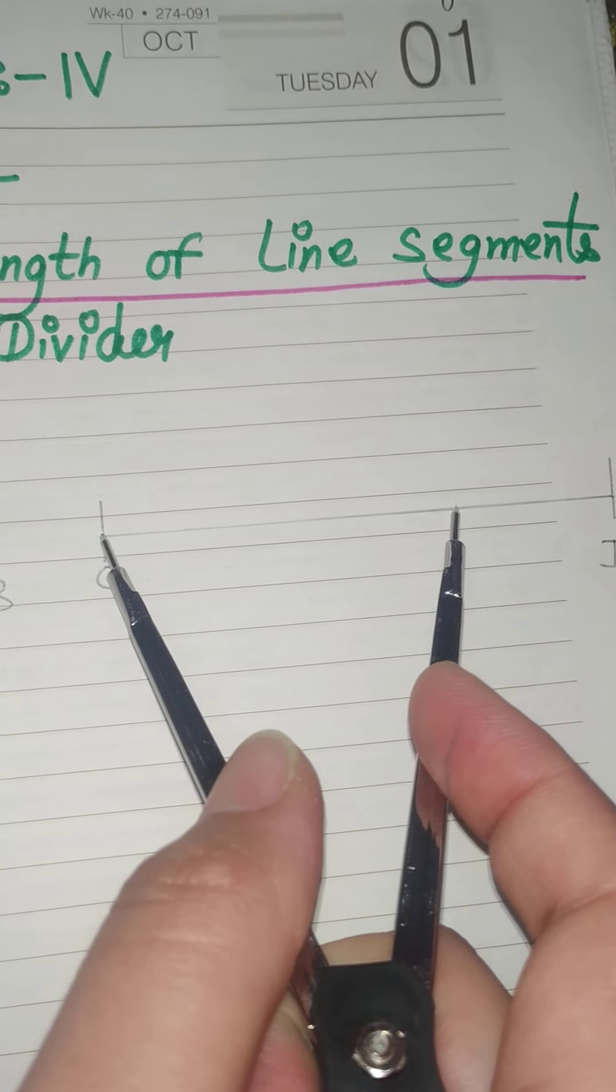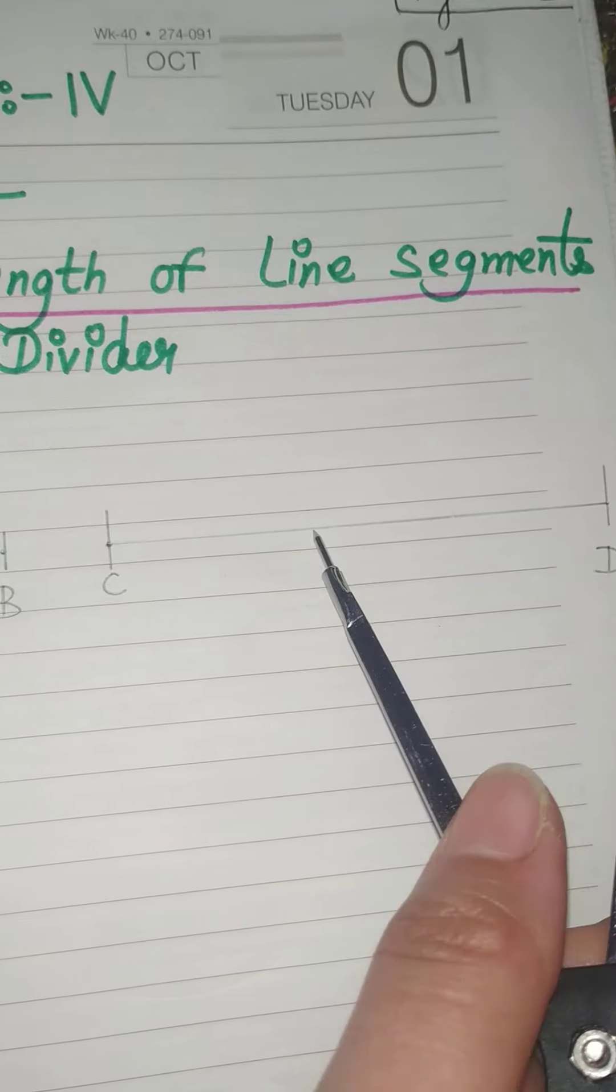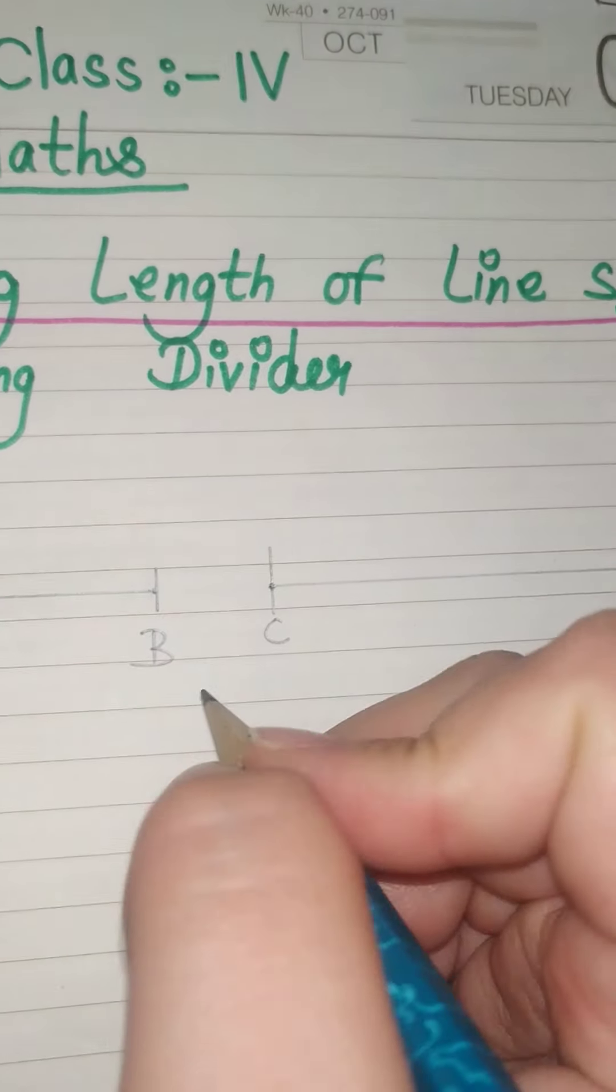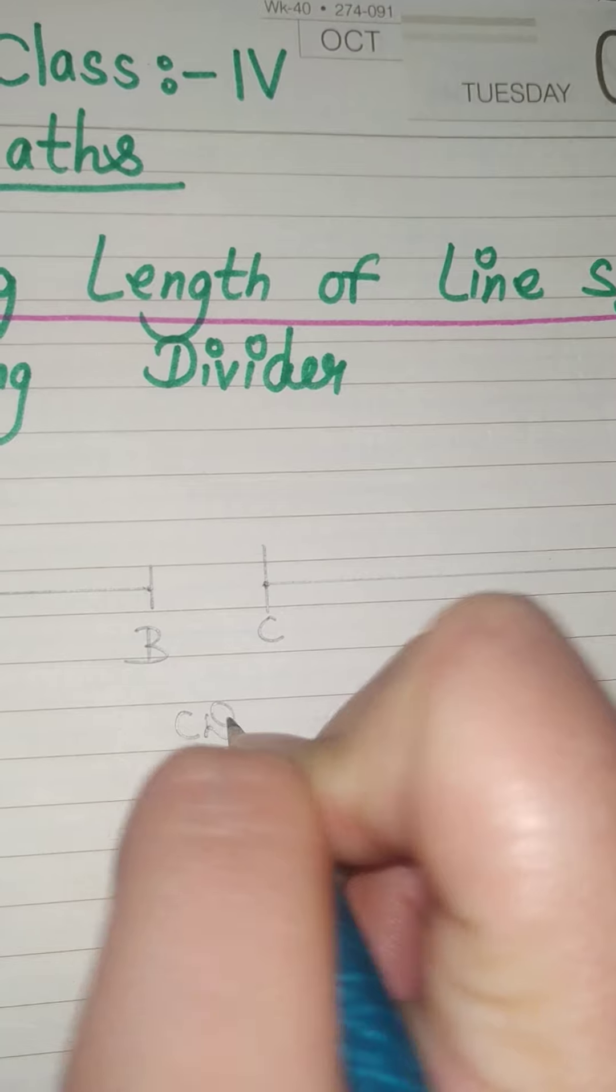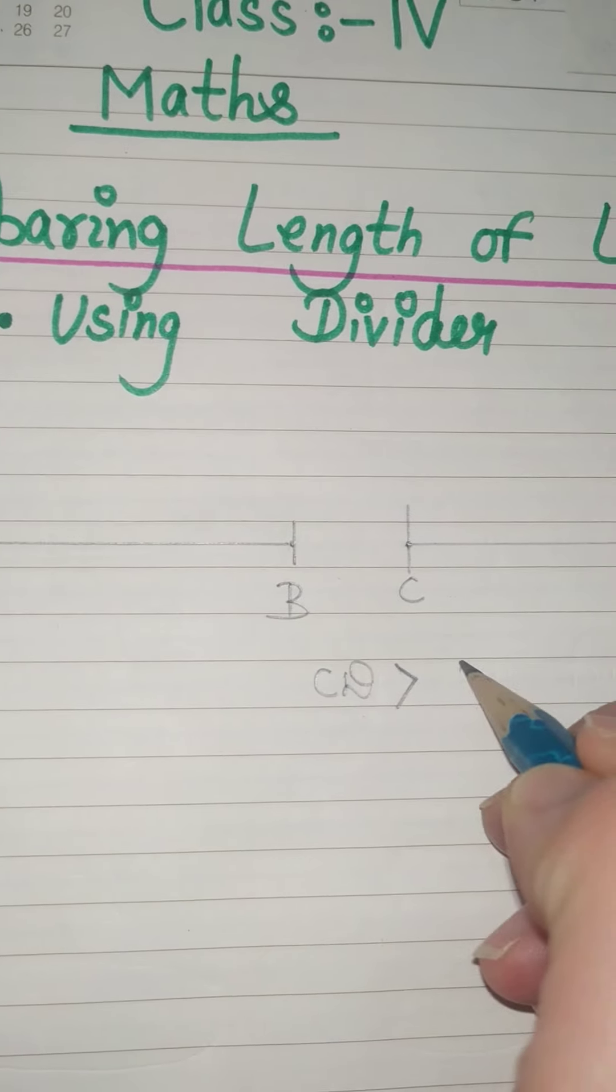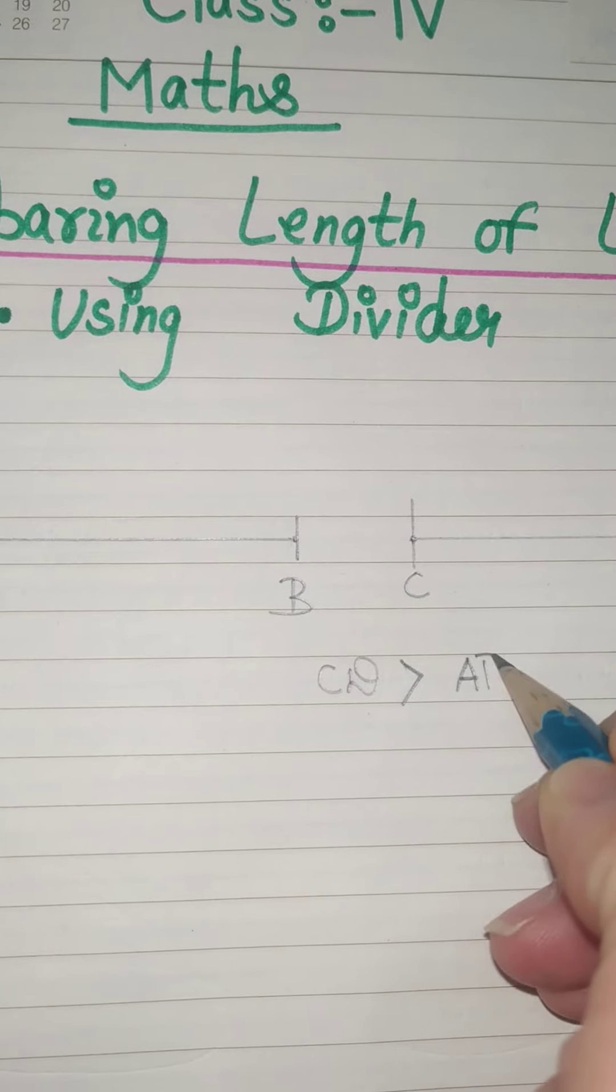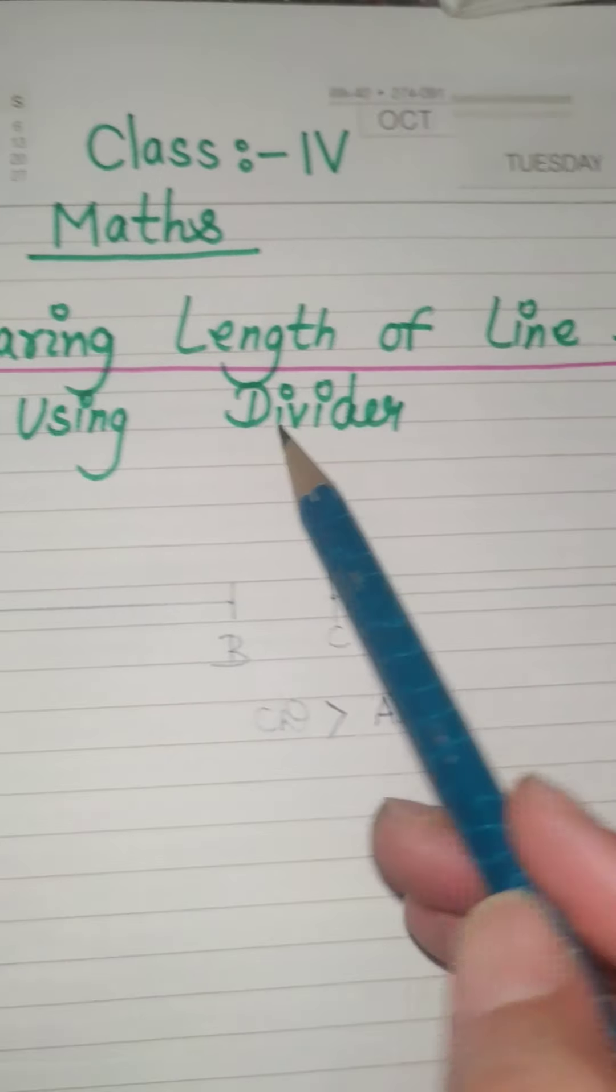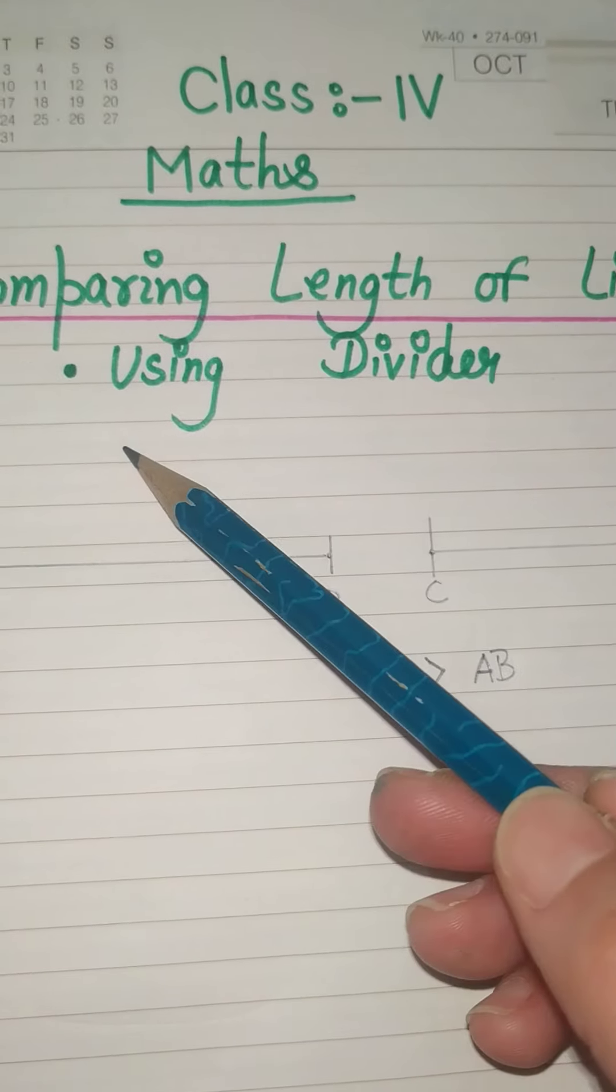So from here you can say this line segment CD is greater than AB. So this is how you can measure the length of line segments by using the divider.